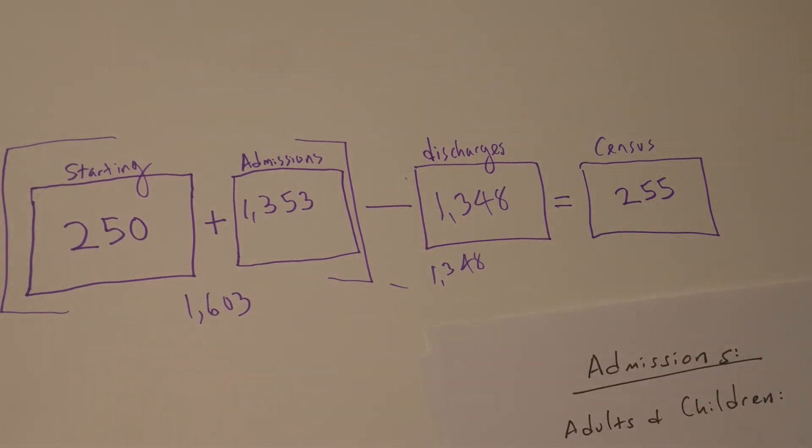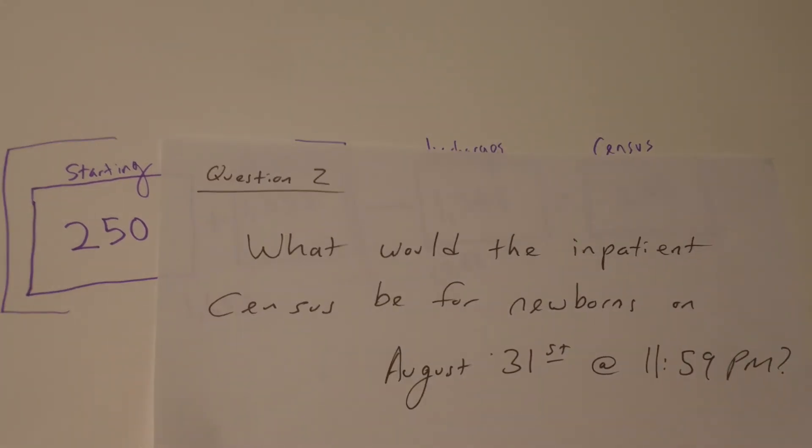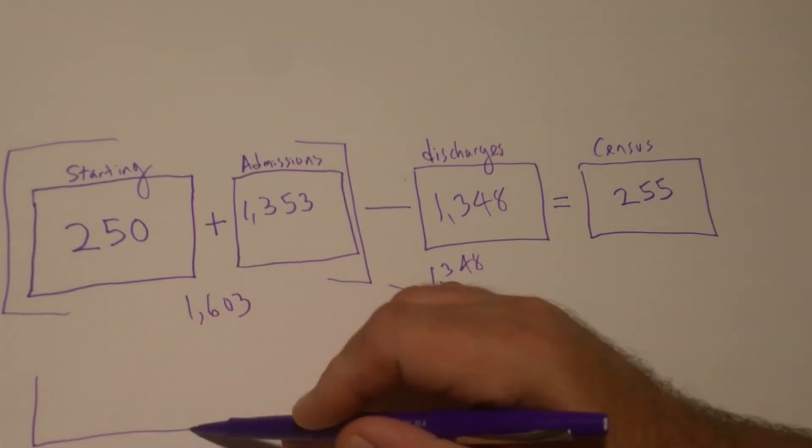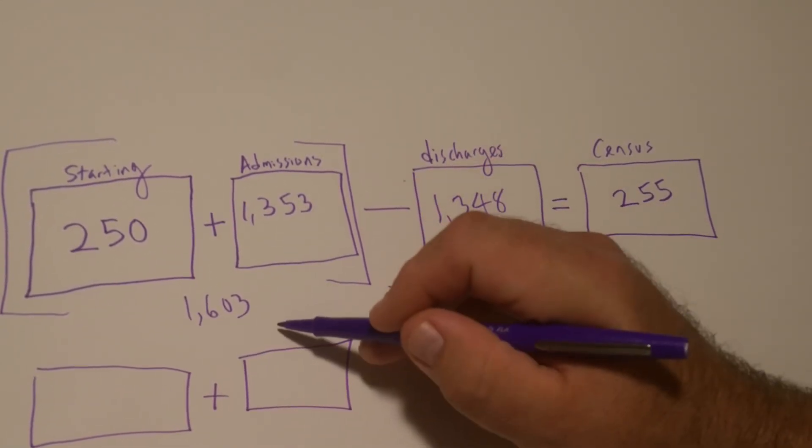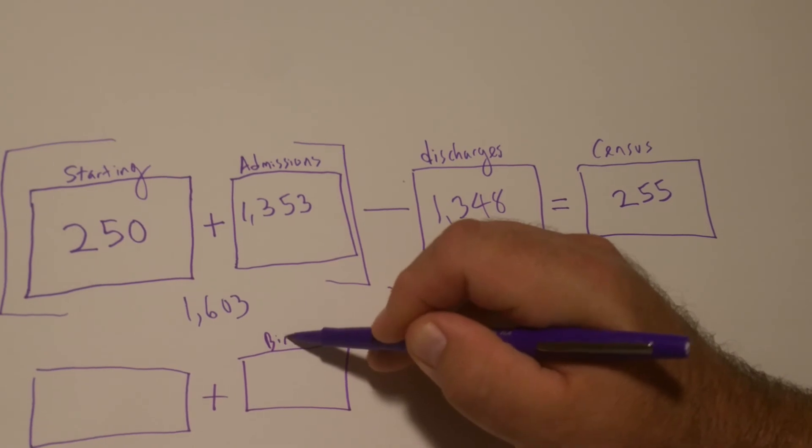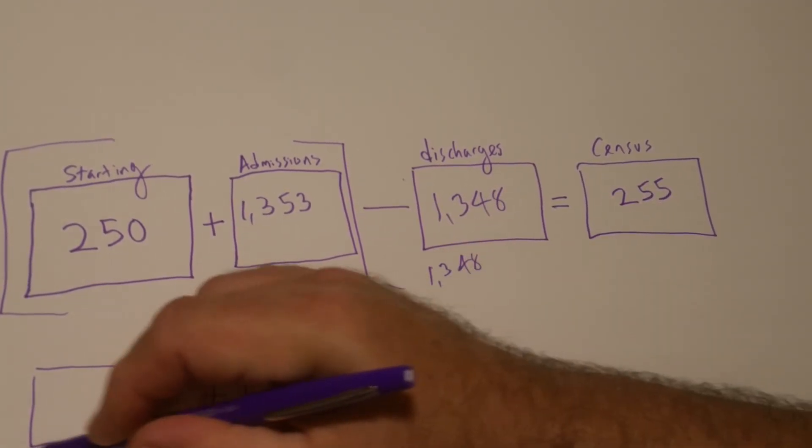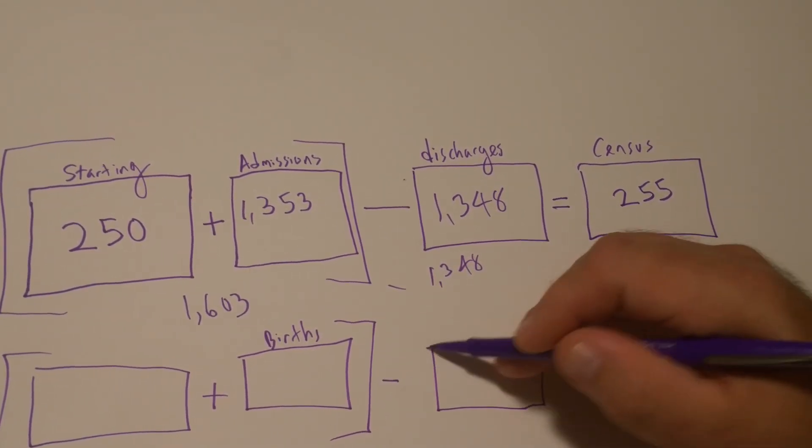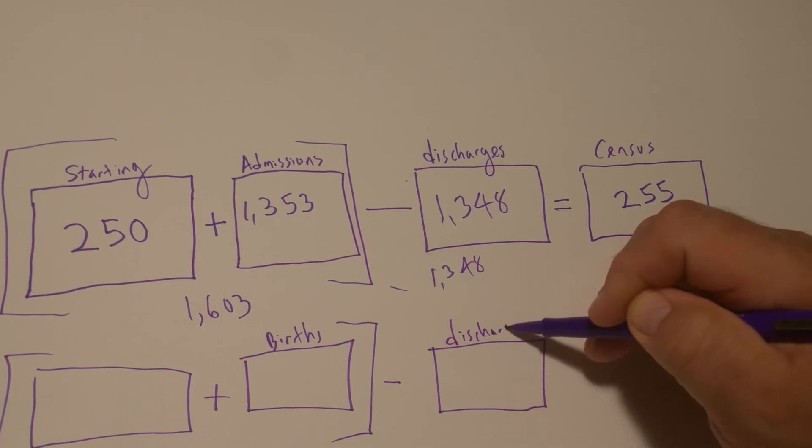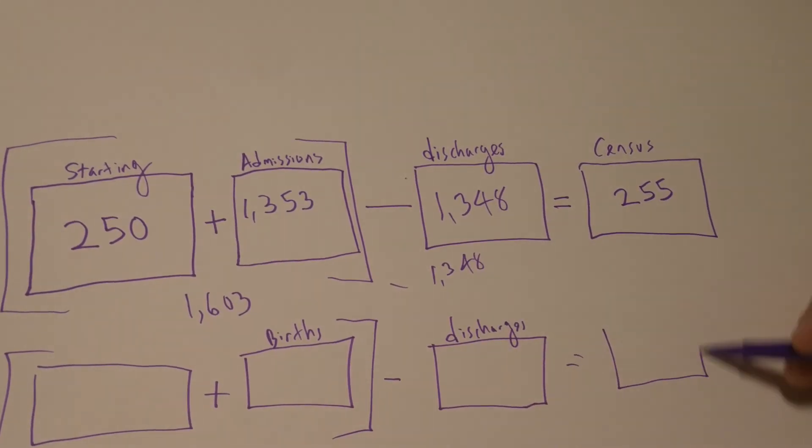Now, the second question is asking us, What would the inpatient census be for newborns on August 31st, 11:59? So, we're going to do the same thing. We're going to take our starting. In this case, we're going to add, excuse me, not admissions, but births. Lump those together. We're going to subtract from that any discharges. And that's going to give us our census of newborns.